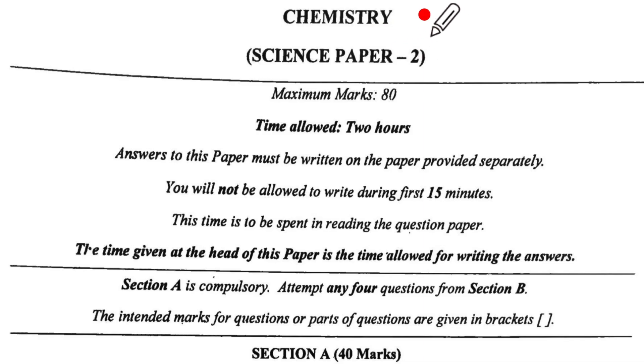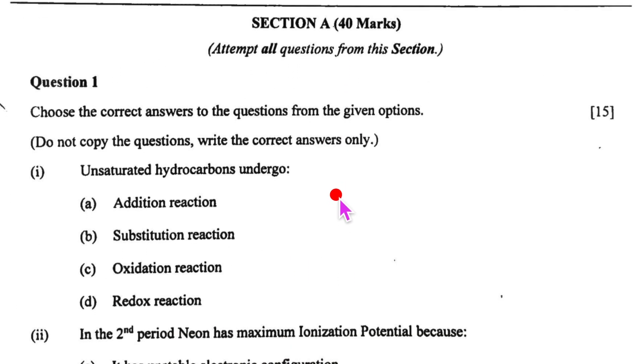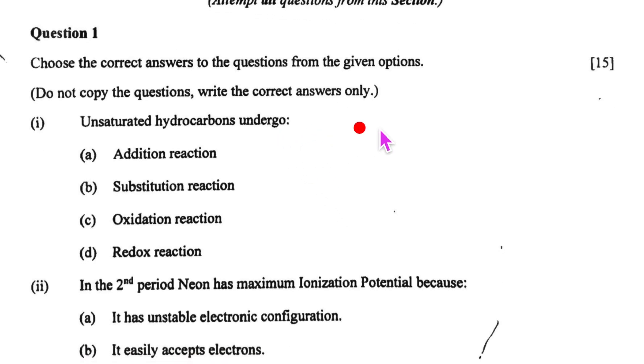This is the ICAC 2024 Science Paper 2 Chemistry. The paper was held today and as you know there is Section A of 40 marks and Section B of 40 marks. In this video I will be solving Section A and the MCQs. Check with this paper what you have written whether it is correct or no and then write in the comment box whether you got the correct answers or not. Watch the video till the end.